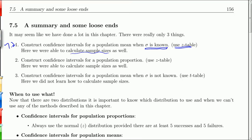Then in 7.3, we constructed confidence intervals for a population proportion. In this case, we used the z table again, and we were also able to calculate sample sizes — meaning how big of a sample do we need to create a confidence interval with some given maximum margin of error at some given confidence level.